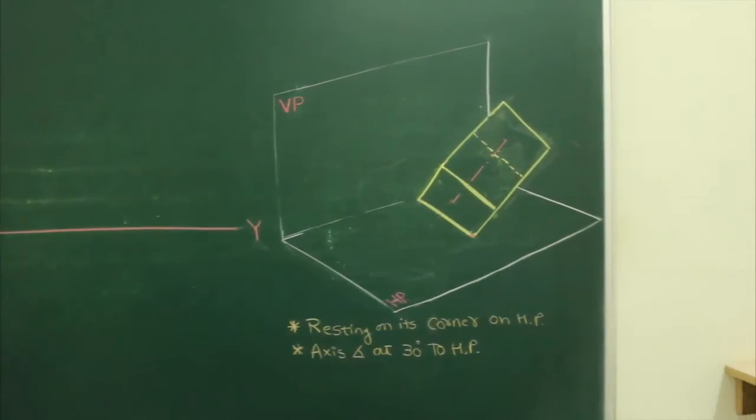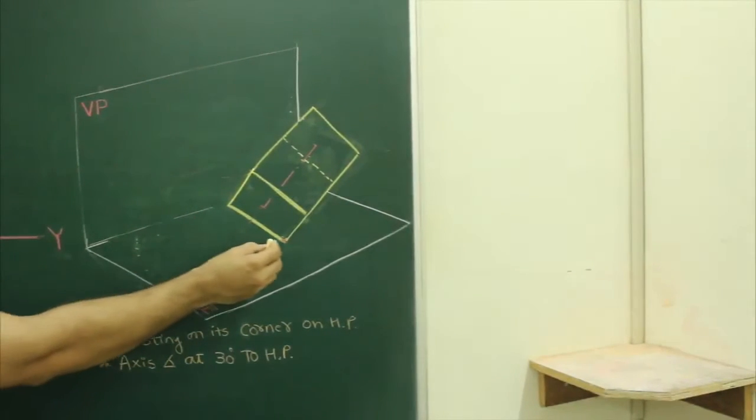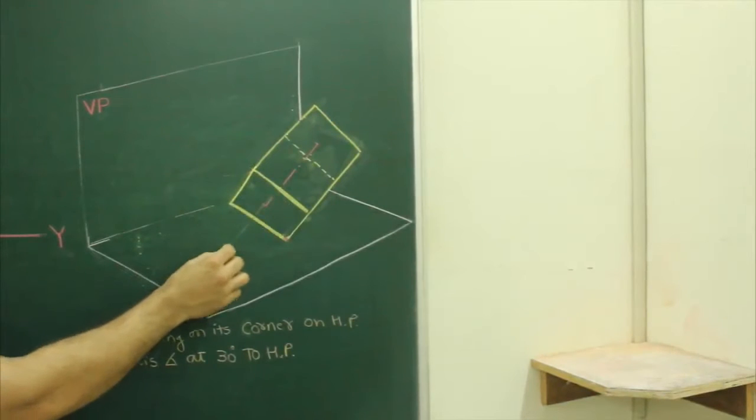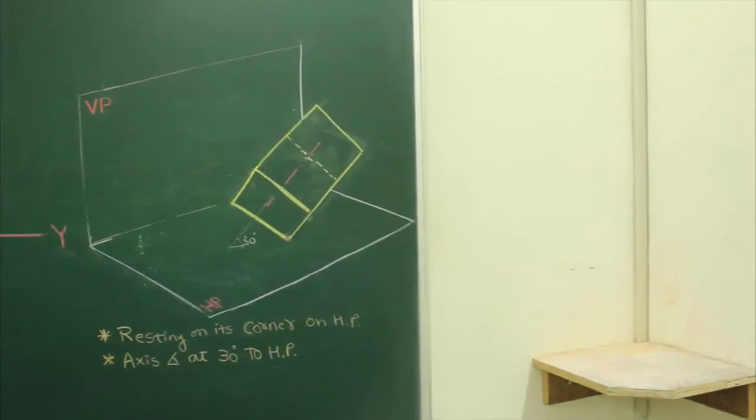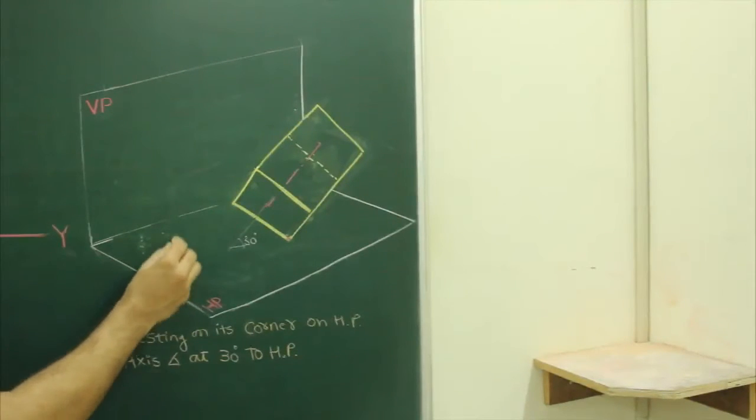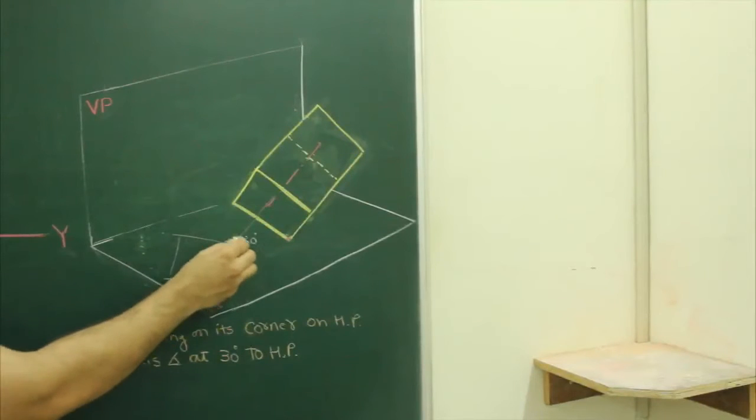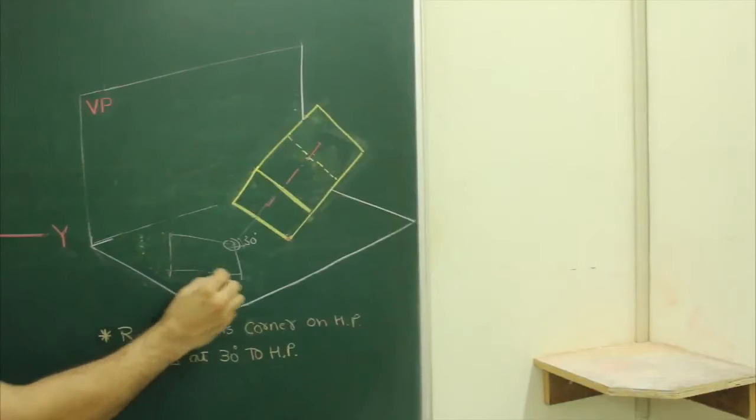In this problem, a square prism is resting on one of its corners on HP. It is resting on one of its corners and axis inclined 30 degrees to HP. Since the axis is inclined to HP, first we will draw the axis perpendicular to HP and we will draw it in such a fashion that the corner will come on the right hand side because it is resting on one of its corners.